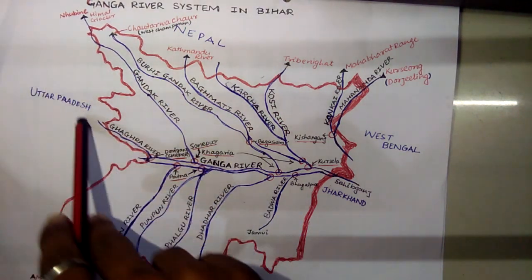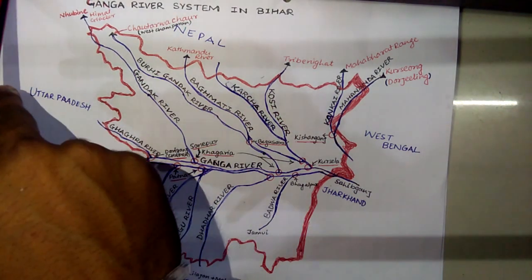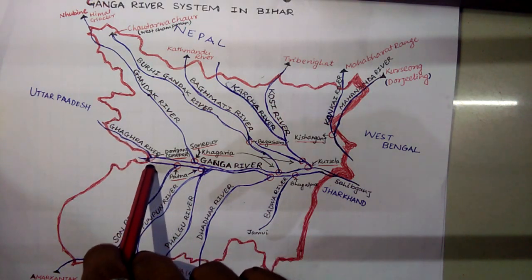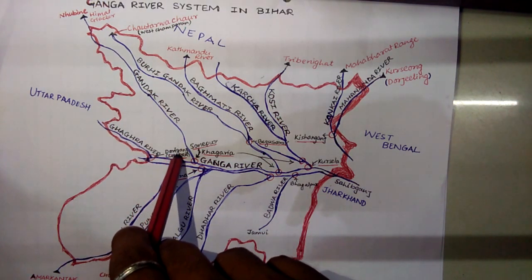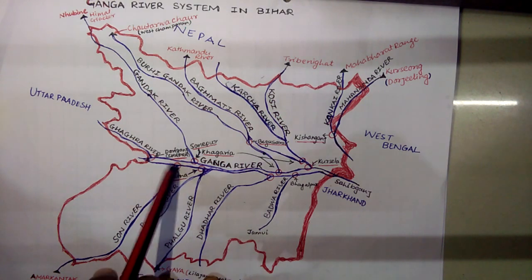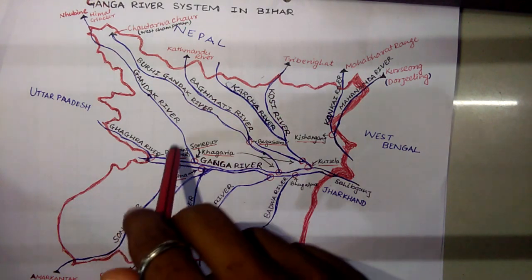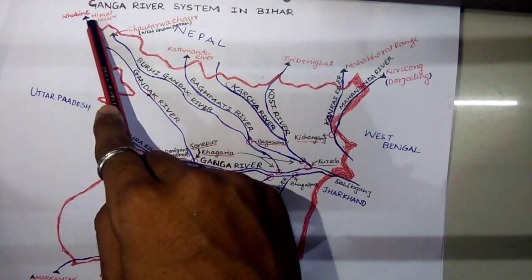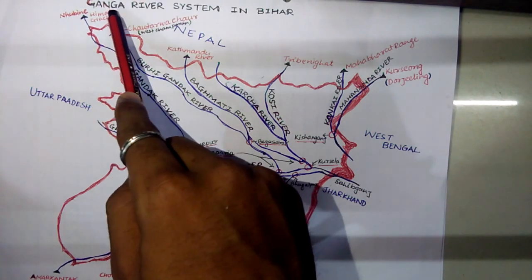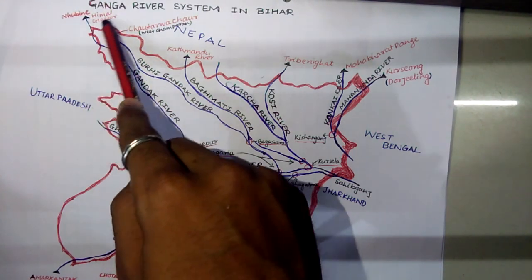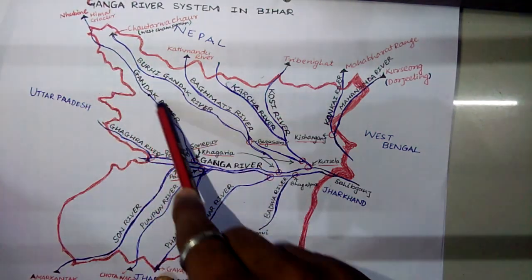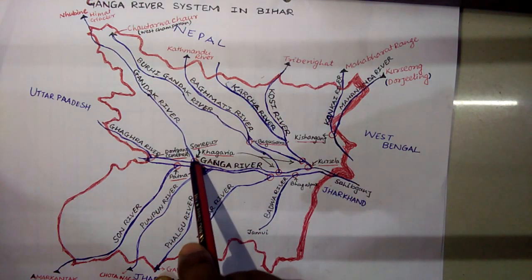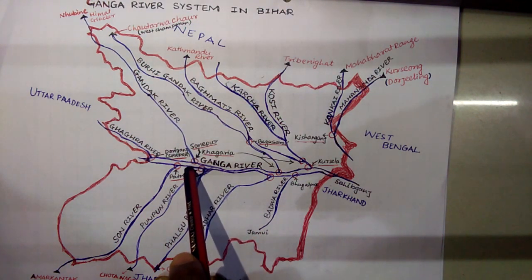First we talk about the Ghagra river. The Ghagra river comes from Nepal and Uttar Pradesh and then merges into the Ganga at a point called Doriganj, which is in Chapra. This is the Gandak river, coming from the Nambaini Himalayan glacier, which is also in Nepal, and it confluences with the Ganga river at Sonpur district.